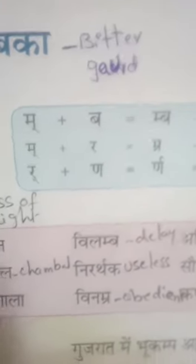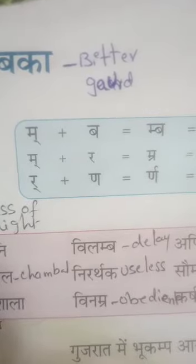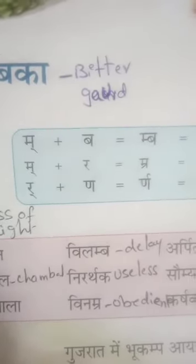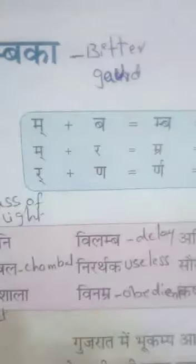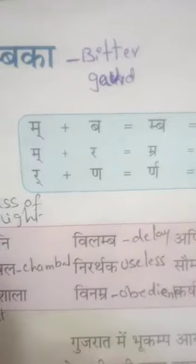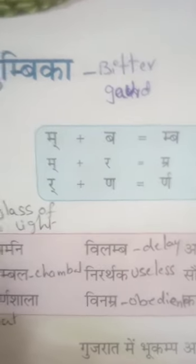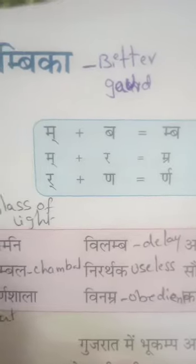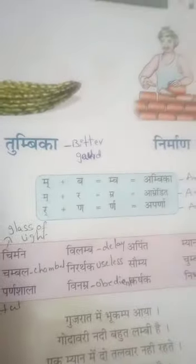So if you are in a prayer, NIRARTHAK means useless. VINAMR means obedient — O-B-E-D-I-E-N-T.